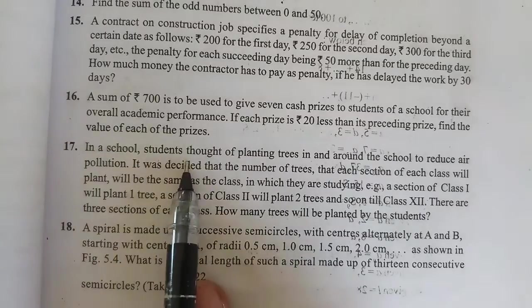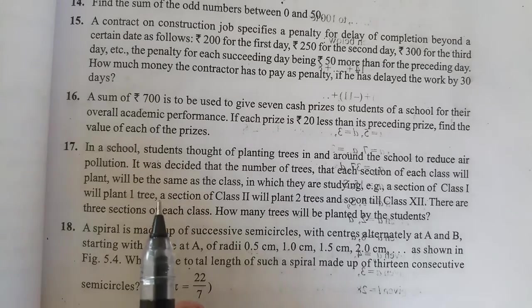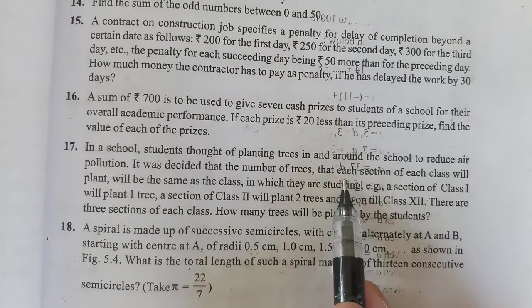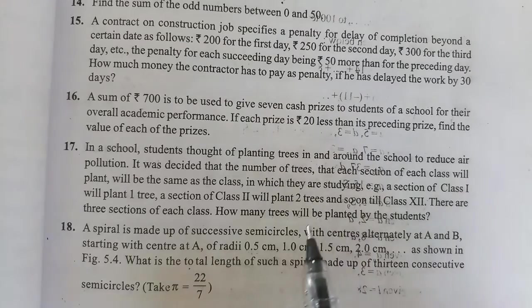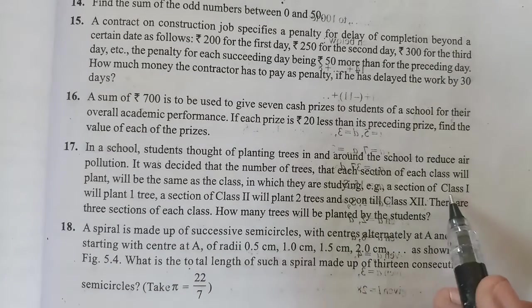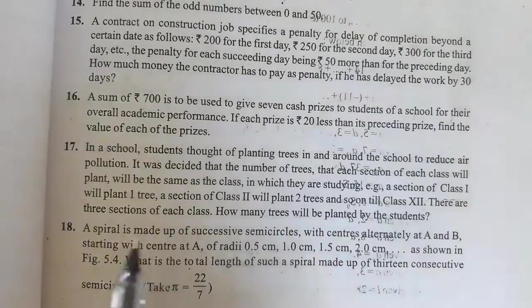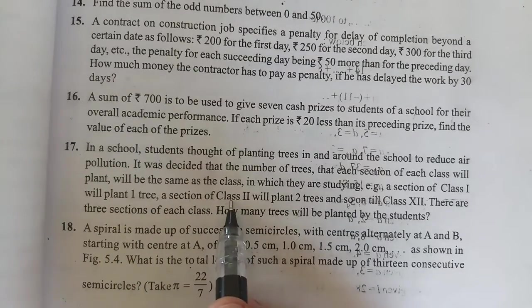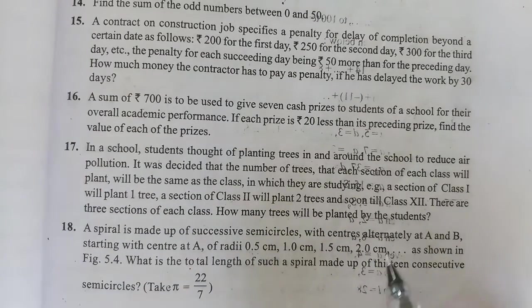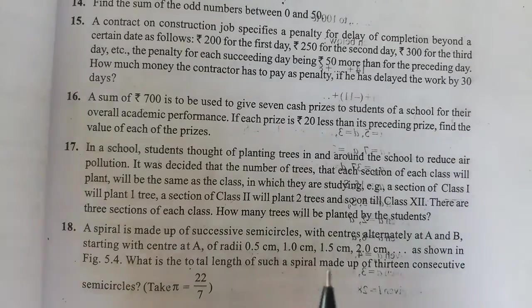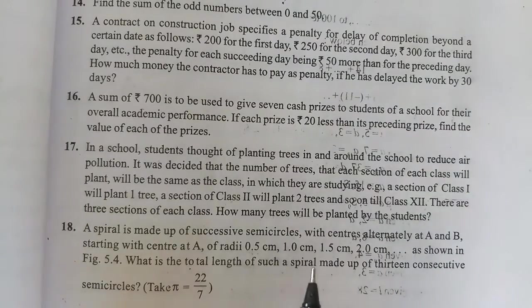First, we will understand this question step by step. In a school, students thought about planting trees so that we can reduce air pollution. For example, the first section will plant one tree, the second section will plant two trees, the third section will plant three trees, and so on.